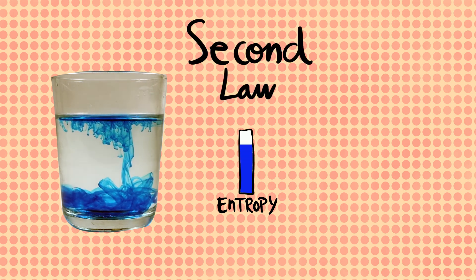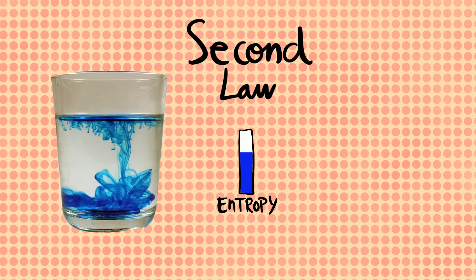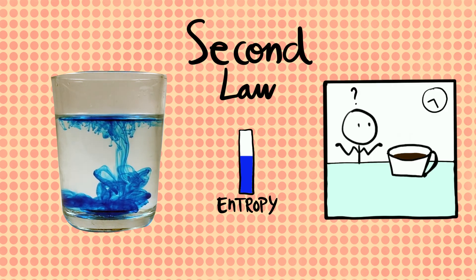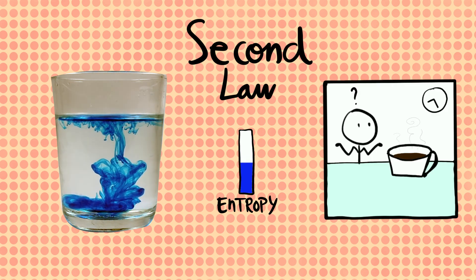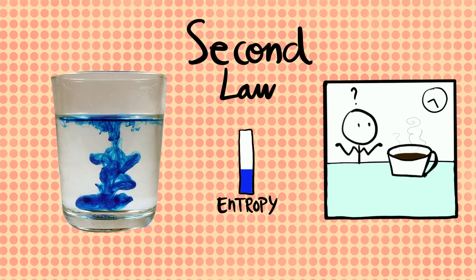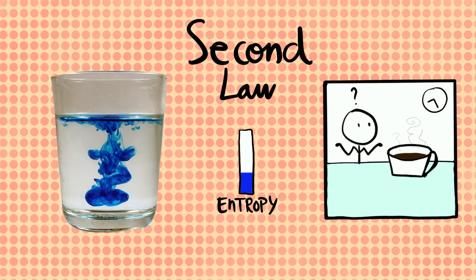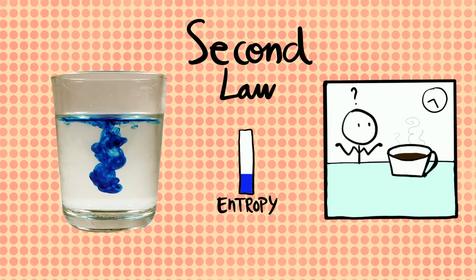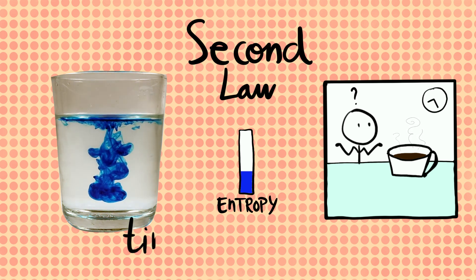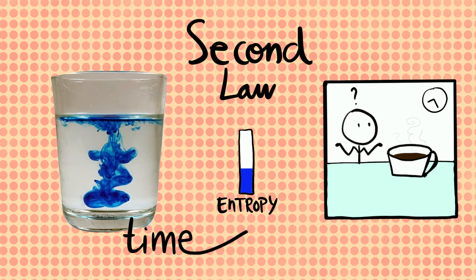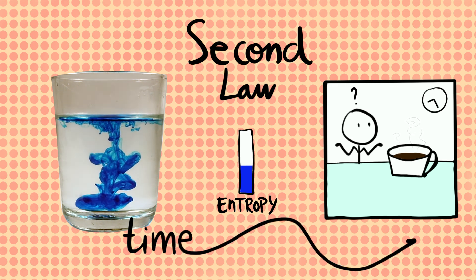But why is that? Why do we never see ink spontaneously demixing from water, or coffee getting hotter at our dining table? The second law seems to select the sequence in which things can spontaneously happen. In other words, the second law imposes the direction of time — and this direction seems to be from order to disorder.